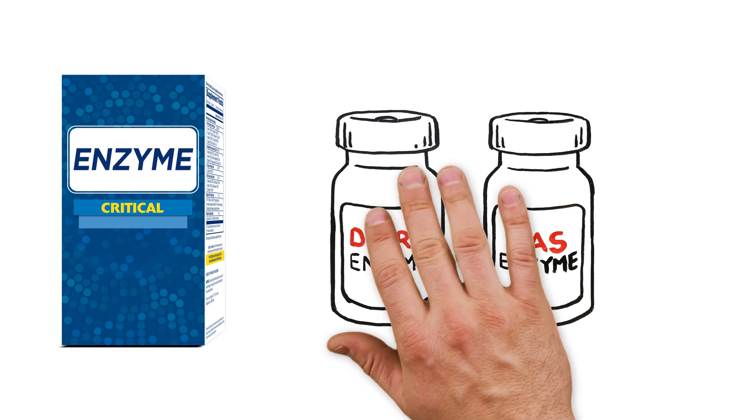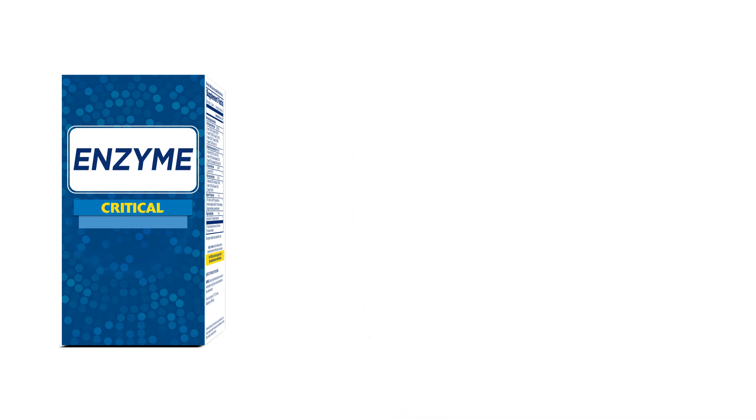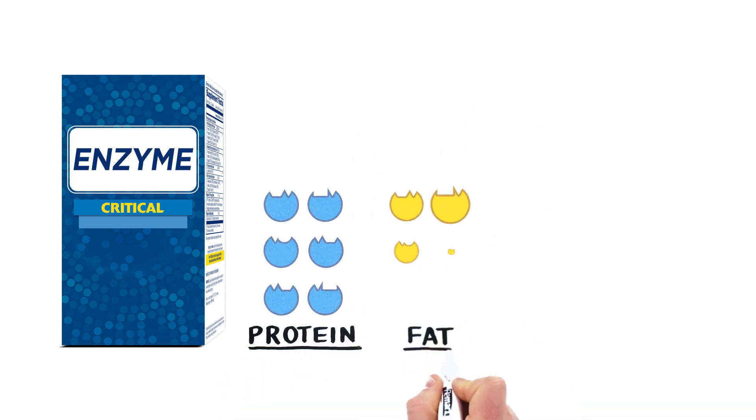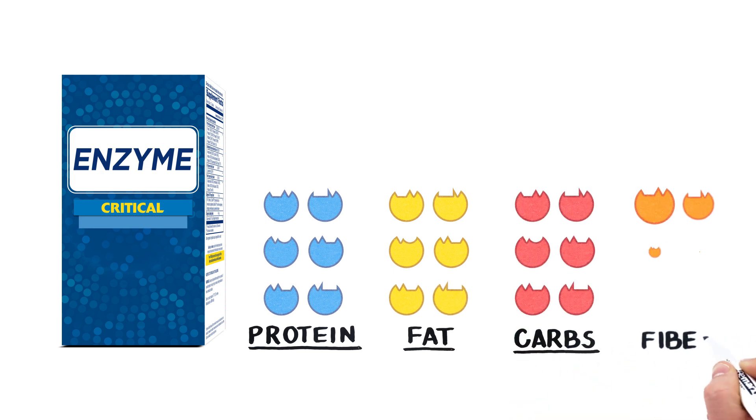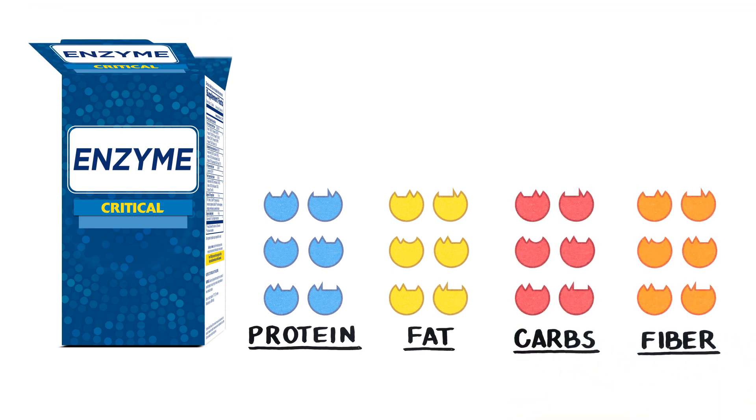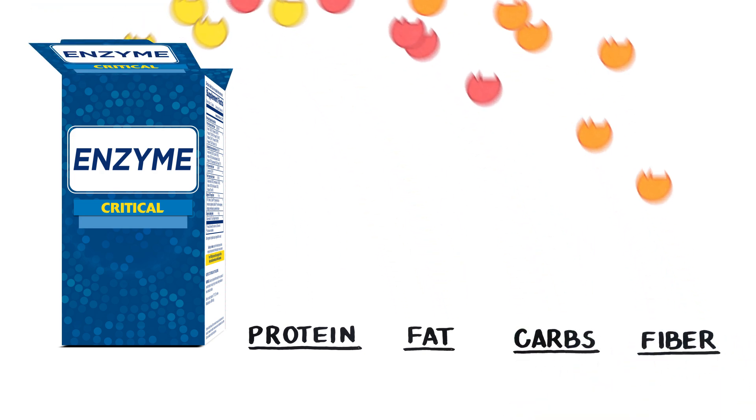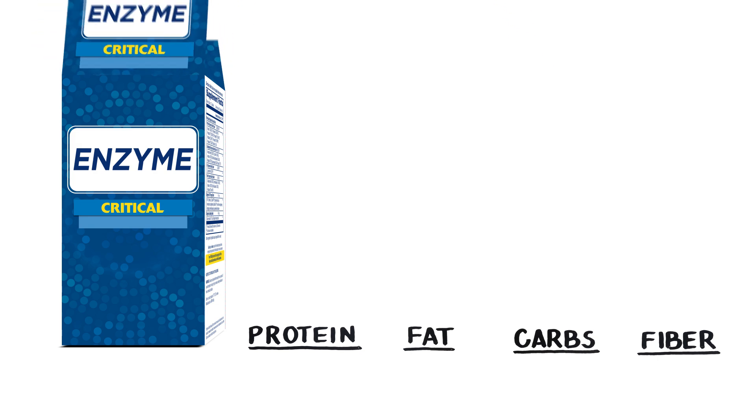However, our diets contain a variety of food groups that include protein, fat, carbohydrates, and fiber. The best formulas will have over 20 different enzymes to help digest the wide assortment of food we consume.